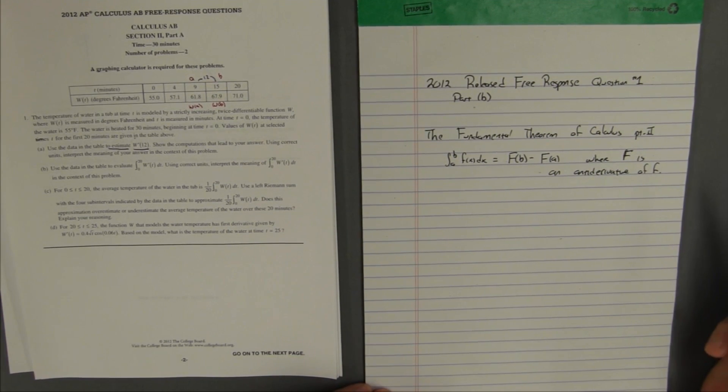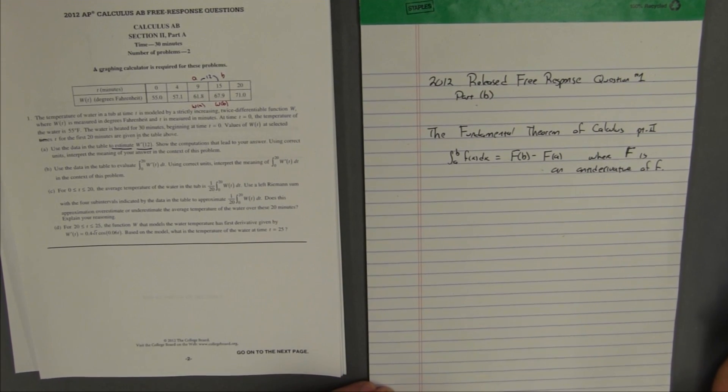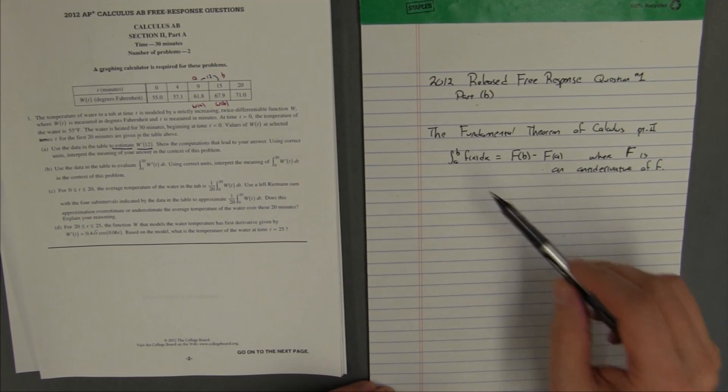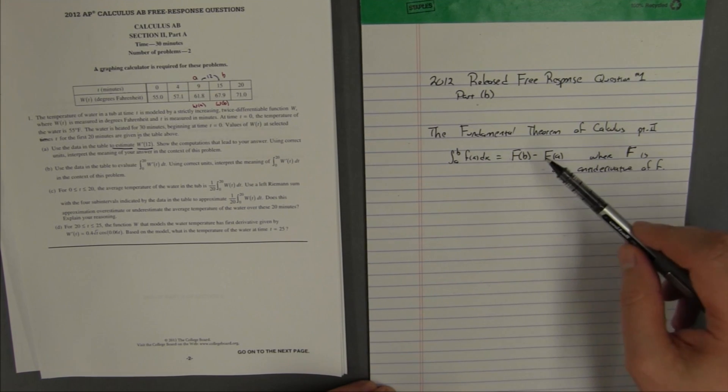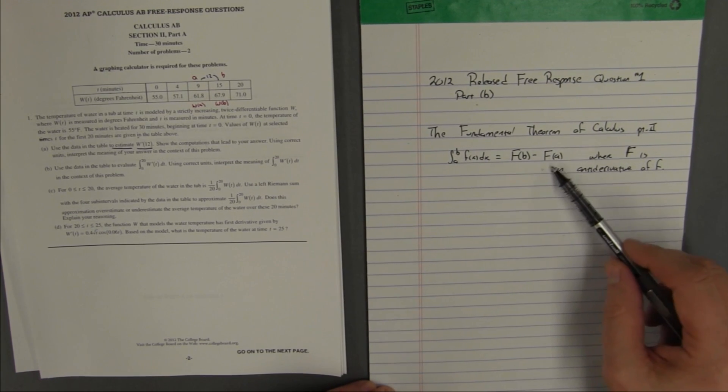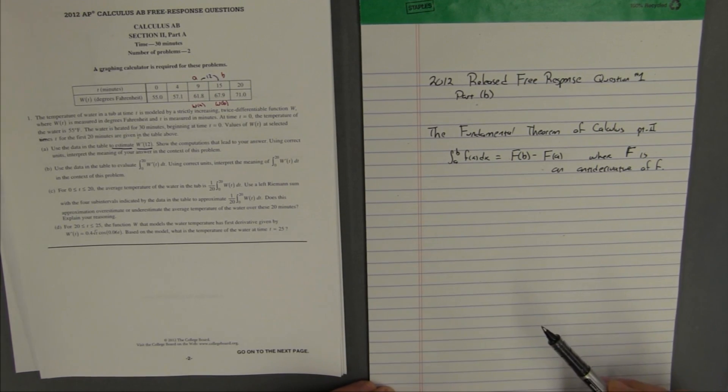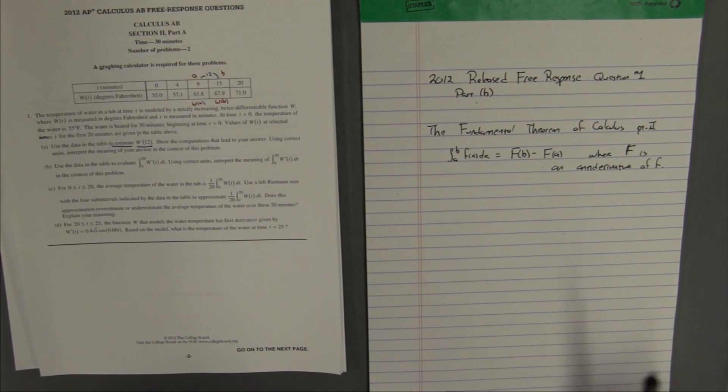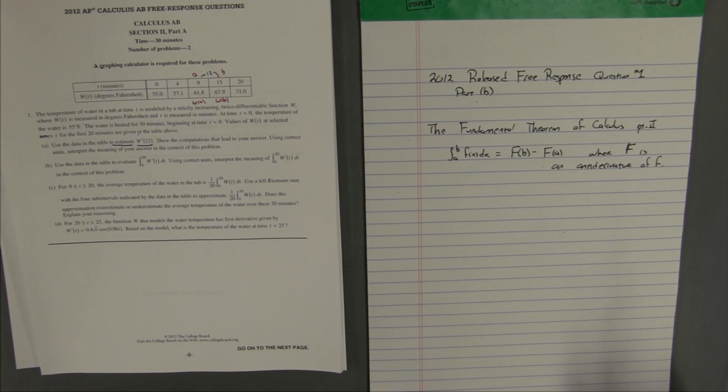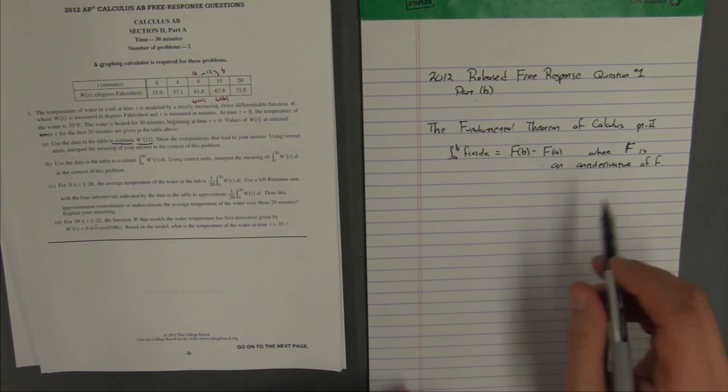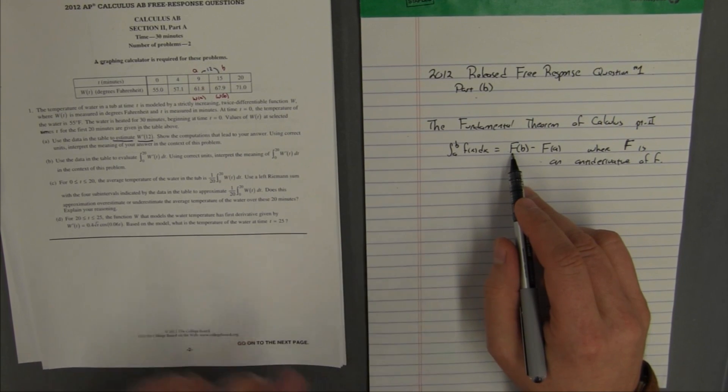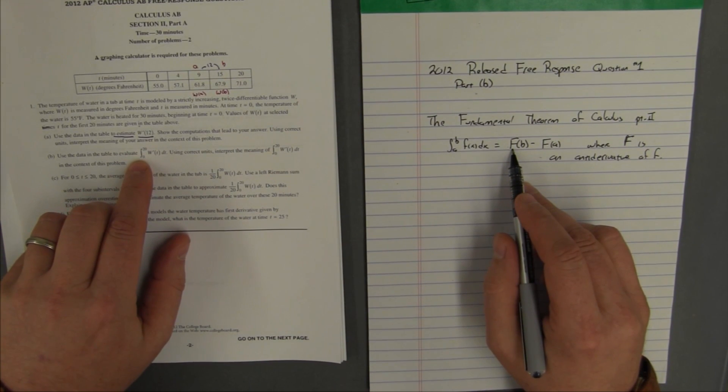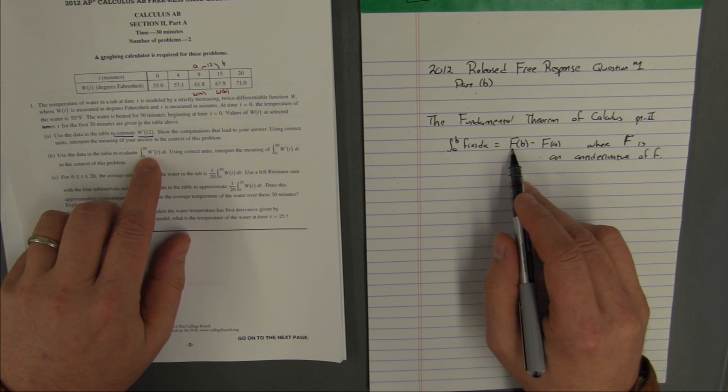This is sometimes called the evaluation part of the theorem because it's what allows us to actually do an integral if we actually had a function. When you do an integral and you find an antiderivative, you plug in the top limit and the bottom limit, you subtract them. This is what you're doing. Now our problem here is we don't have a function to get the antiderivative of. But what we're supposed to recognize is that this little f, that's the derivative of big F. And look what they're asking us to do the integral of. They're asking us to do the integral of w prime, which is the derivative of w,